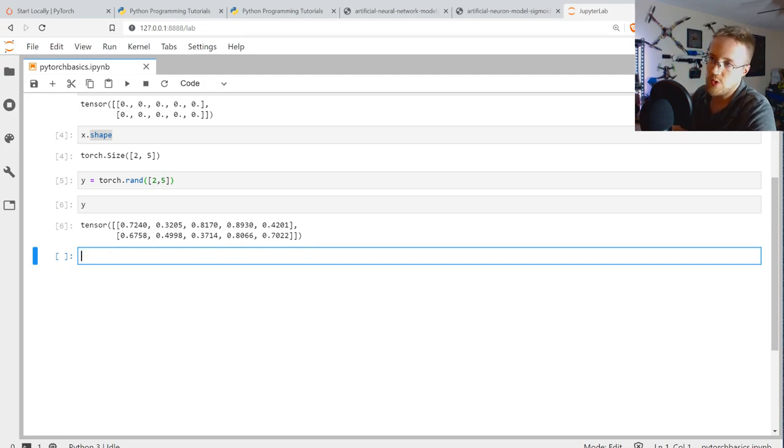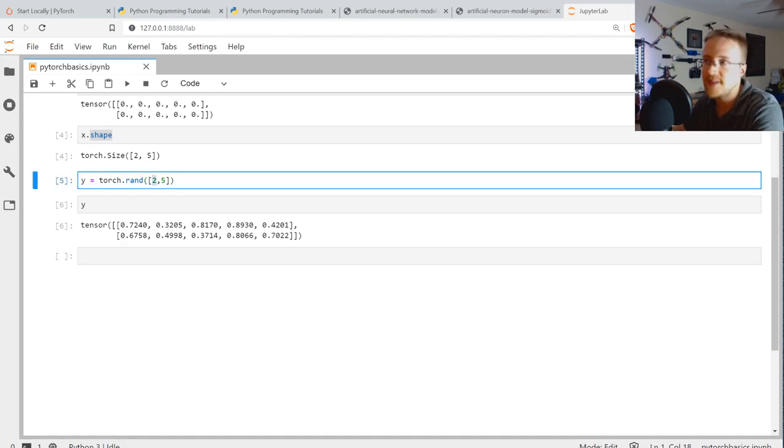So the next thing I want to show is reshaping. So the one thing that for whatever reason they have decided to call something that you are not familiar with is when you want to actually reshape something. In NumPy, you would say dot reshape. And I believe in TensorFlow, it would be a dot reshape. In torch, it's not a reshape. It's called - you use a method called view.